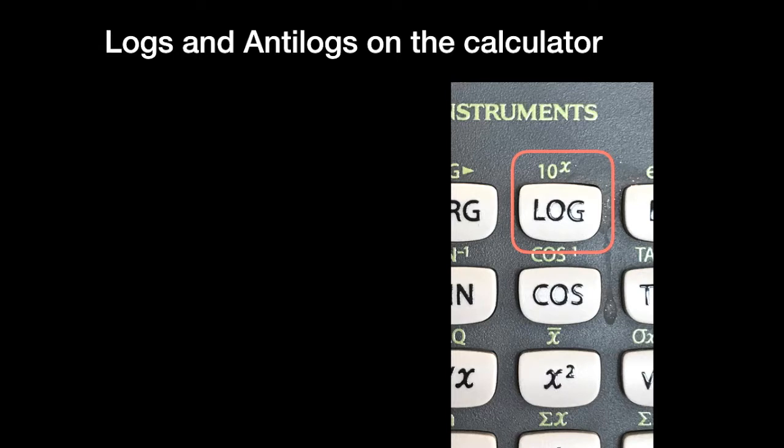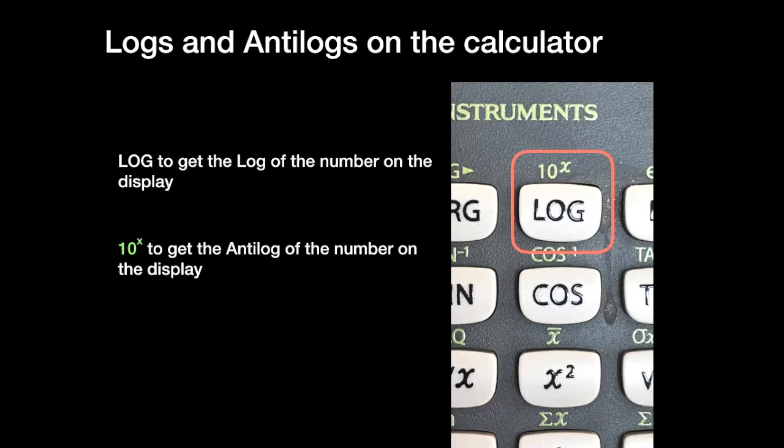Just above log, on that key, you can see 10 to the X. We've said that logarithms are indices. This is the reverse operation. Accessing that number will give you the anti-log. So, given a logarithm in the display, it will return to the number. You press log to get the log of the number on the display, and you press the green 10 to the X to get the anti-log of the number on the display.